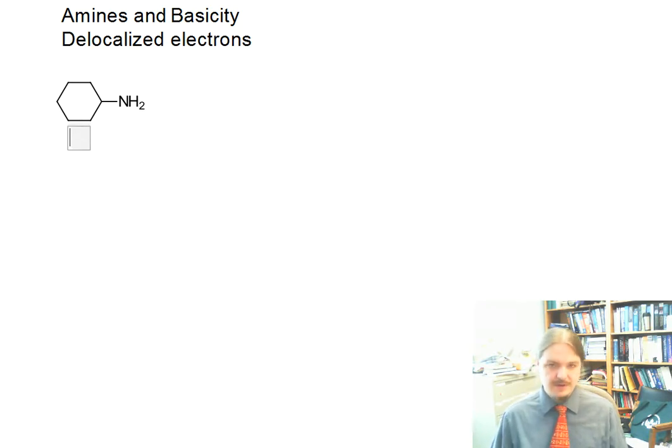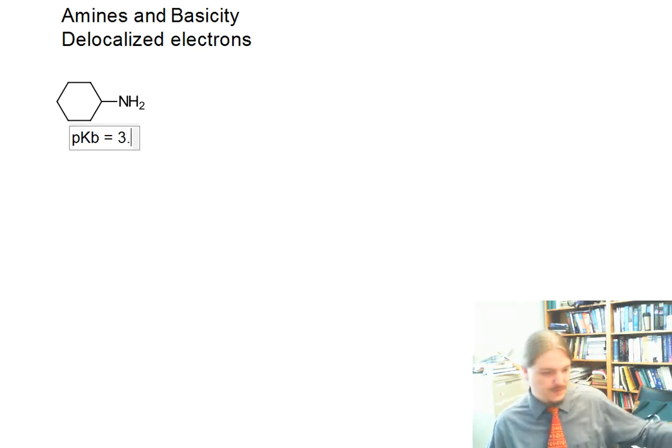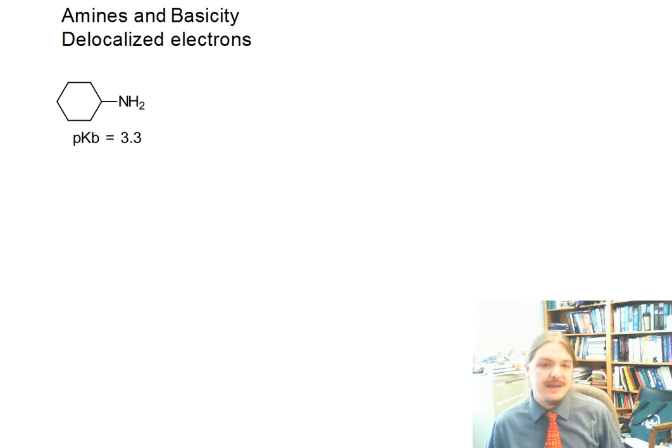One of the things I want to start off with is cyclohexylamine. Cyclohexylamine has a pKb of 3.3, which means that the pKa of cyclohexylamine is 10.7.